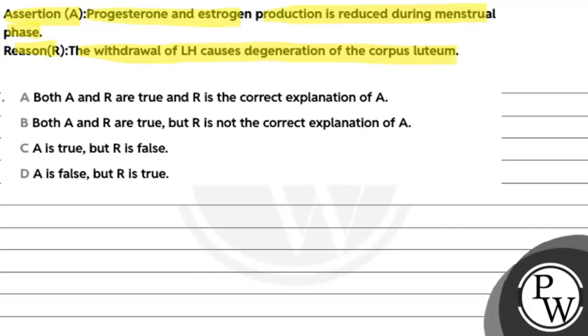Answer A: both assertion and reason are true and reason correctly explains the assertion. Answer B: both assertion and reason are true but reason does not correctly explain the assertion. Answer C: assertion is true and reason is false. Answer D: assertion is false and reason is true.